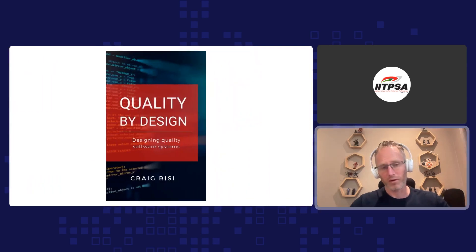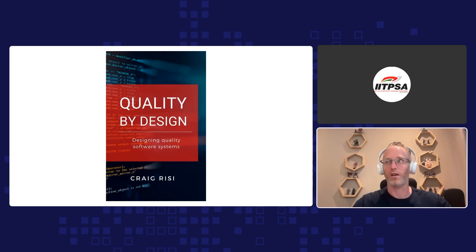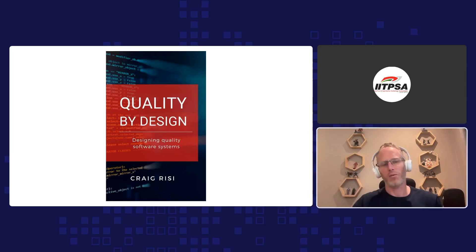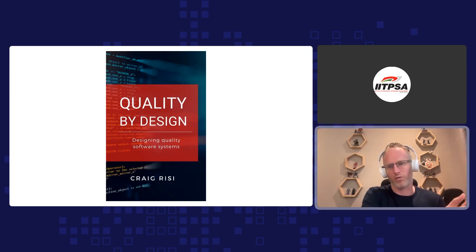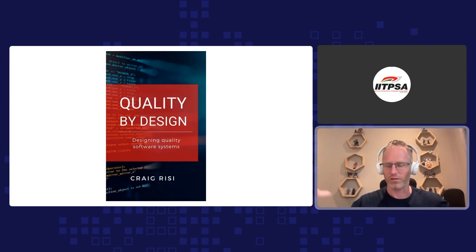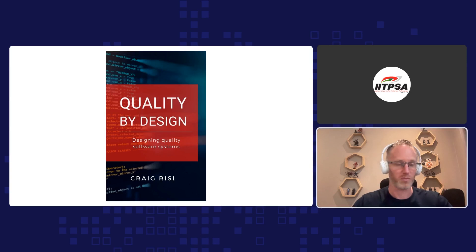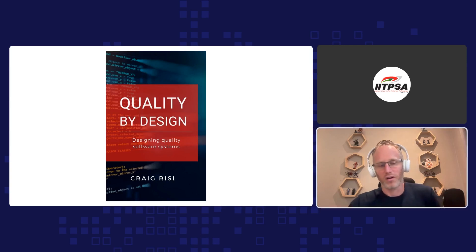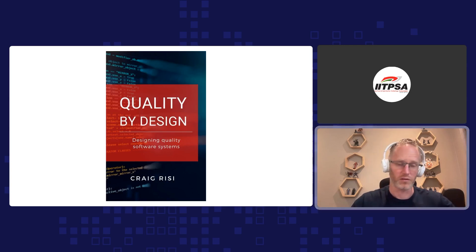I have also written a book called Quality by Design, which looks at software quality — not so much from a testing perspective, although it does talk about testing as well — but more about how do we design software with quality in mind, from its very inception all the way through to the testing phase, to ensure we can produce high quality software. Software quality is ultimately something really important to me. It's not just about the testing; it's about the overall quality of the software. Details are on my website.